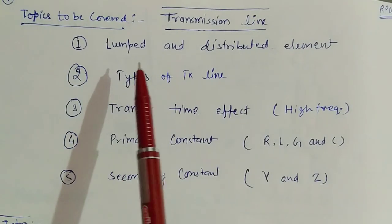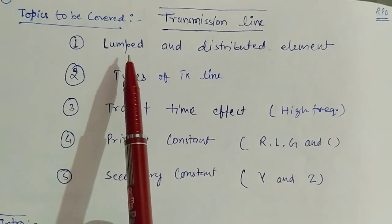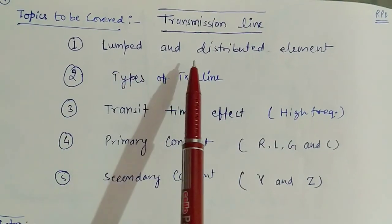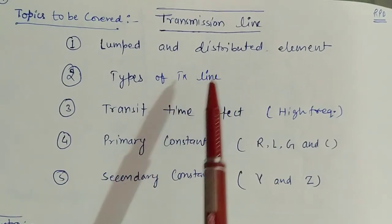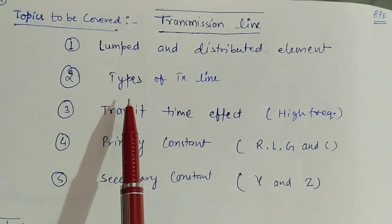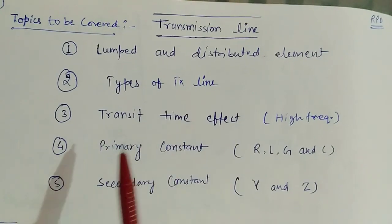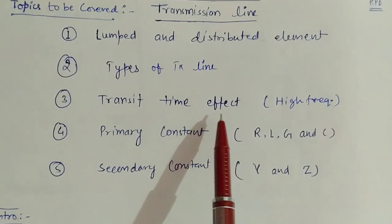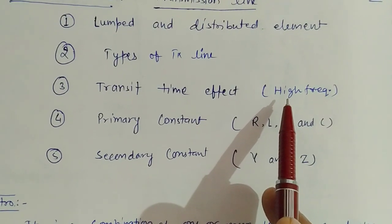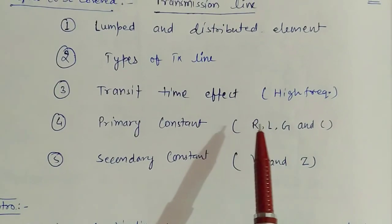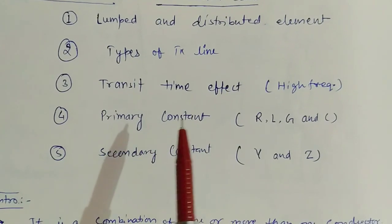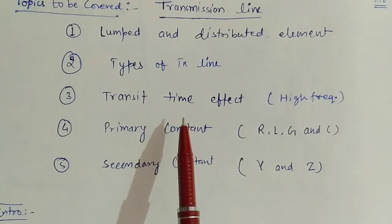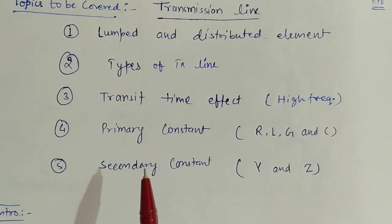Topics to be covered are: first, I will discuss about the lumped and distributed elements — the difference between lumped and distributed networks with respect to the transmission line. Then I will discuss the types of transmission line. Third point, I will be discussing about the transit time effect. When we talk about high frequency in the transmission line, then we should consider the transit time effect. I will derive the relation and explain when we can ignore this effect.